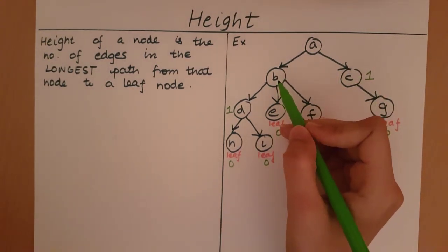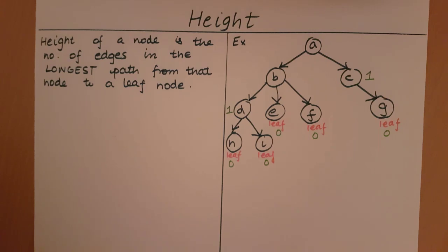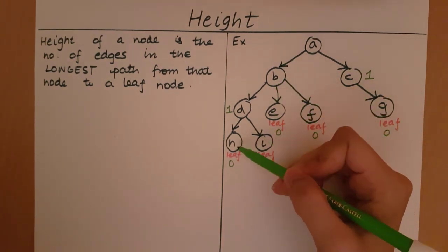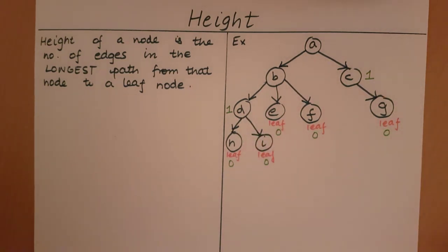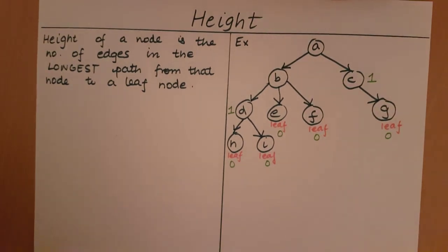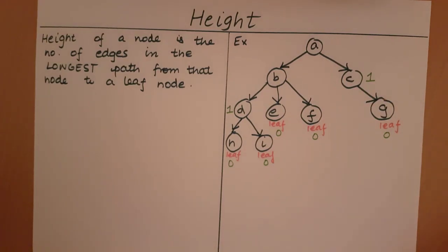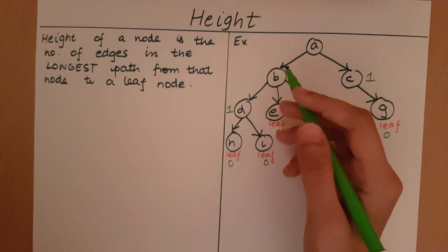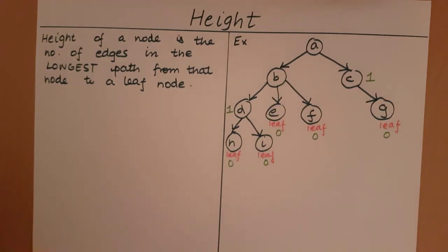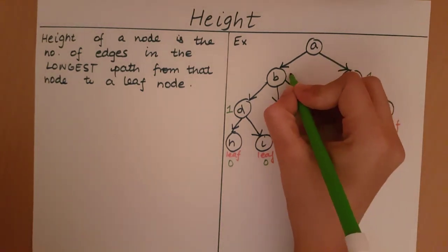Now let's look at node B. Node B can travel to leaf nodes H, I, E and F. When B travels to H or I, it takes two edges each. From B to E is one edge, and from B to F is one edge. The longest path from B to a leaf node takes two edges — either B to D to H, or B to D to I. So the height of B is 2.